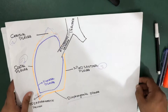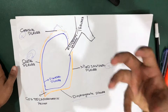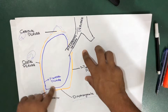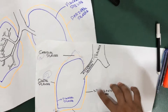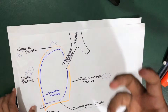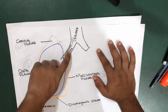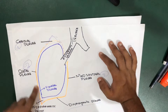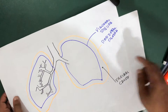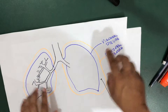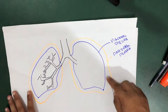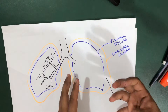The pleural cavity is a space — the lungs are covered by the visceral pleura, which is a serous membrane. The visceral pleura and the lung together are covered by the parietal pleura. Between the visceral pleura and parietal pleura there is a cavity called the pleural cavity.